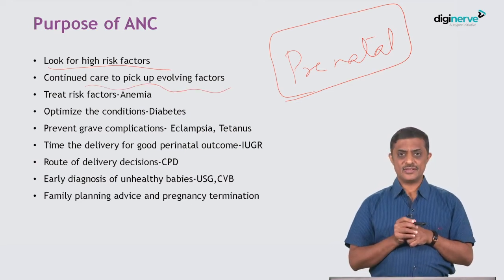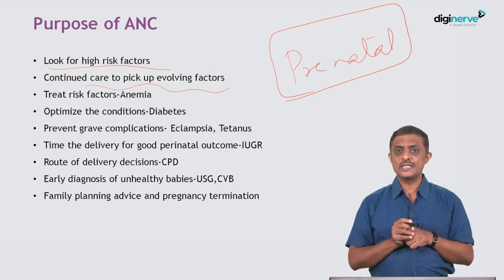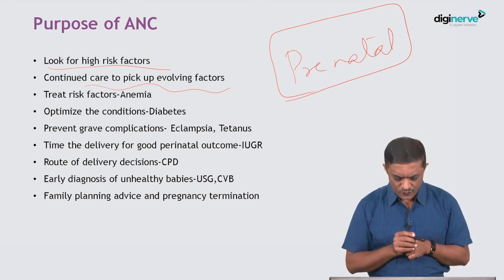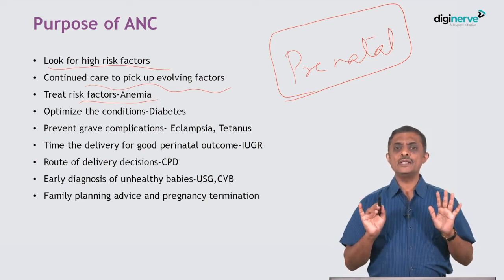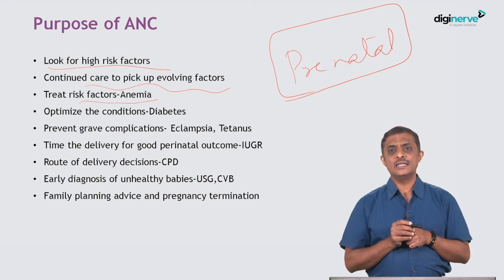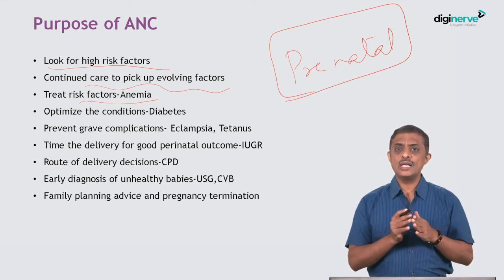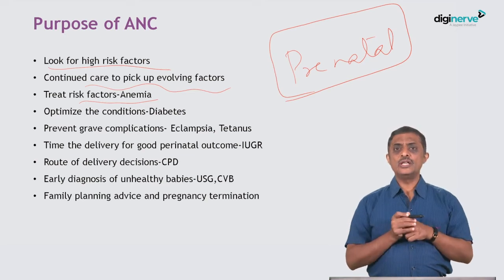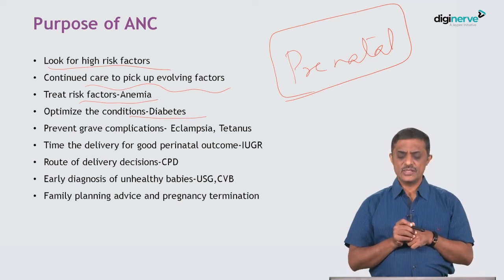Continued care is needed to pick up evolving factors — in the first interview you may identify a couple of factors, but with vigilant follow-up you can pick up new factors in subsequent visits. Once you find risk factors, you treat them. For example, correct anemia. For conditions like diabetes mellitus or gestational diabetes, you optimize the condition — it may not be totally curable, so you keep the patient on medications to maintain an optimum level.